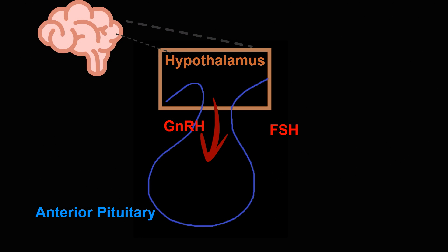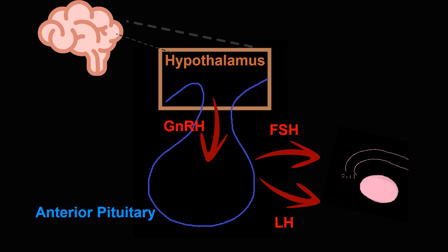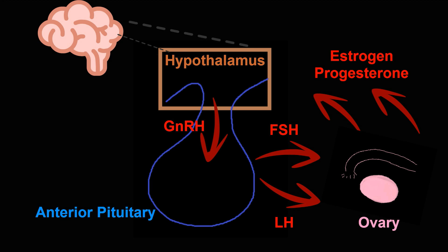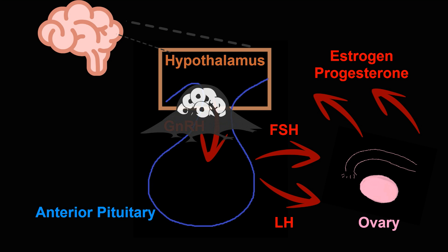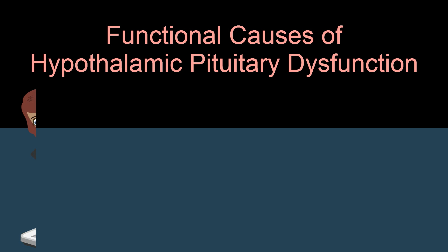GnRH stimulates the anterior pituitary to release FSH and LH. The FSH and LH stimulate the ovaries to begin the cycle of folliculogenesis, ovulation, and estrogen and progesterone release. Anything that alters this delicate feedback loop can cause hypothalamic-pituitary amenorrhea. A prolactin-secreting pituitary adenoma or craniopharyngioma can impinge on the pituitary stalk and alter blood flow.